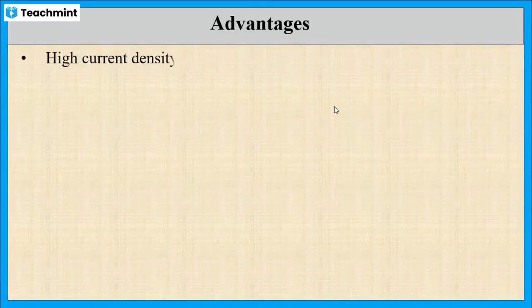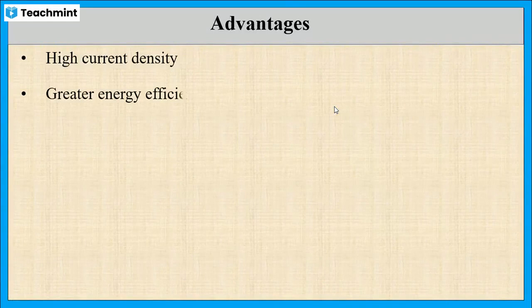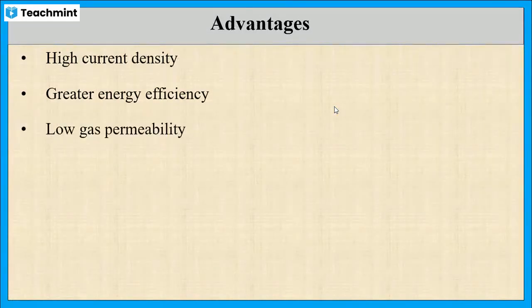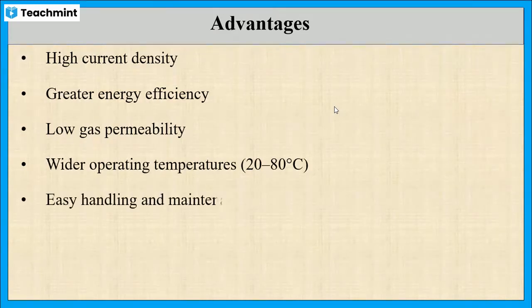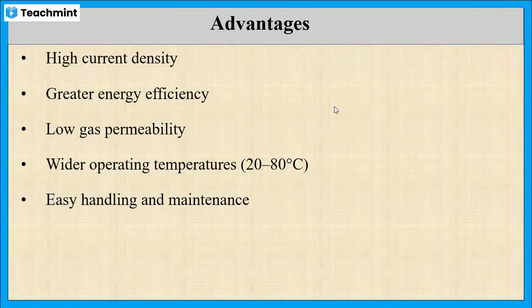There are a variety of advantages of PEM electrolysis such as high current density, greater energy efficiency, low gas permeability, wider operating temperature (20 to 80 degrees Celsius), and easy handling and maintenance. These are some of the advantages of PEM electrolysis.